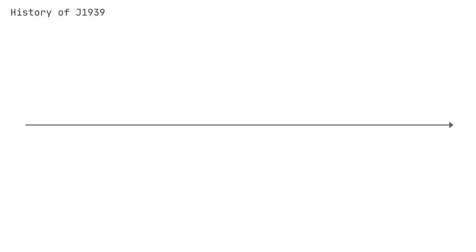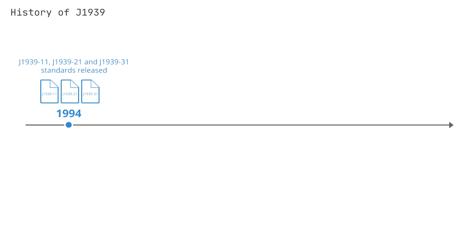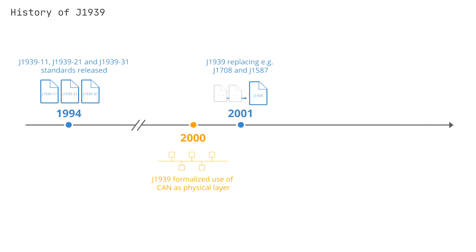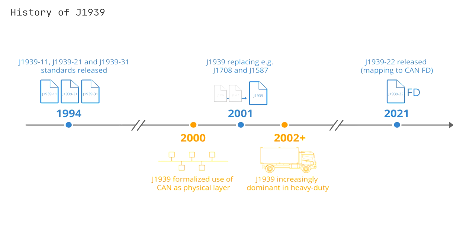To understand the origins of J1939, let's briefly look at the history. In 1994, the first documents were released including J1939-11, J1939-21, and J1939-31. In 2000, J1939 formalized the use of CAN bus as the physical layer, and from 2001, J1939 began replacing older standards like J1708 and J1587. Today, J1939 is by far the dominant protocol in heavy-duty vehicles. In recent years, J1939 has also been adapted through J1939-22 for the next generation of CAN bus, called CAN-FD.